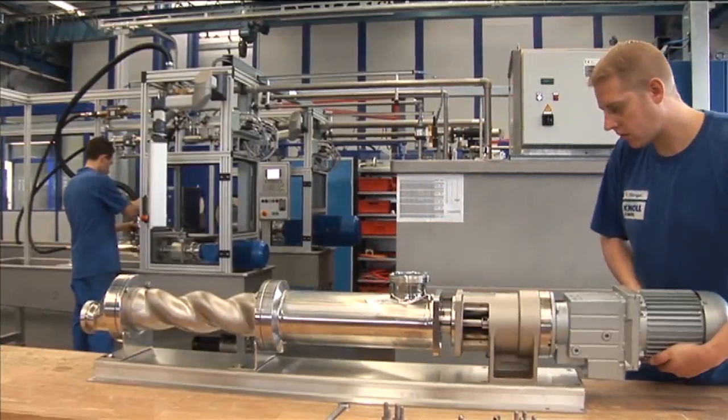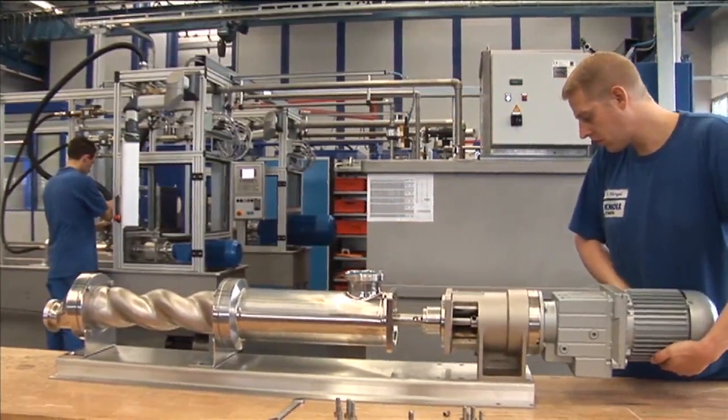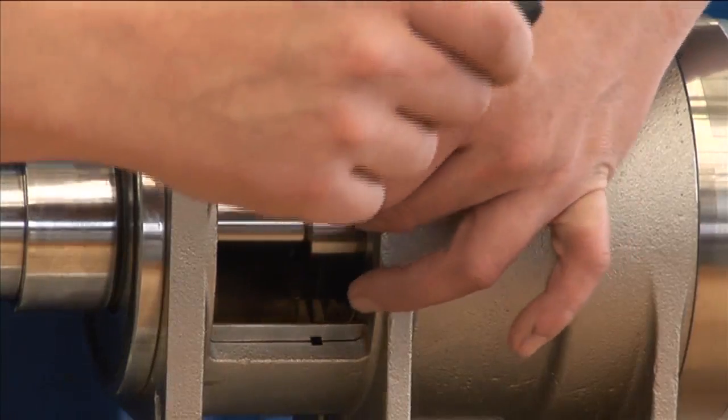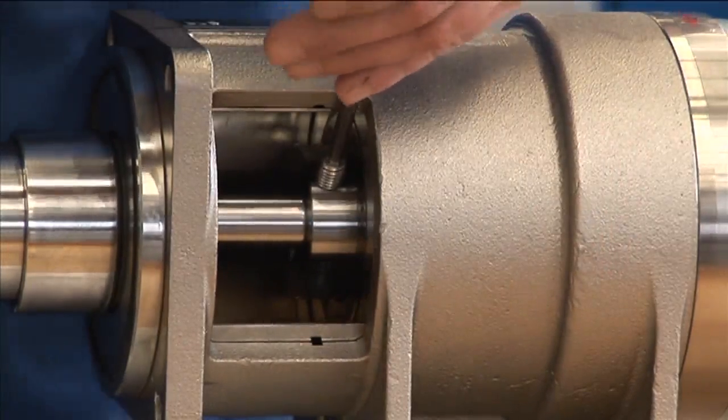The service technician can now remove the bearing block and the gear motor from the pump. Lock the output shaft to prevent it from turning.